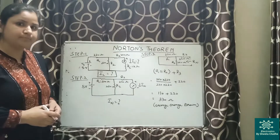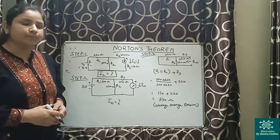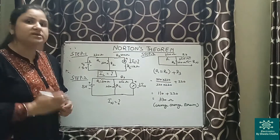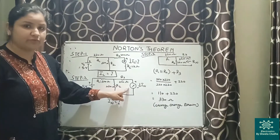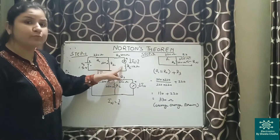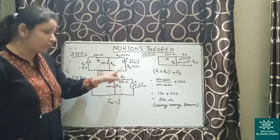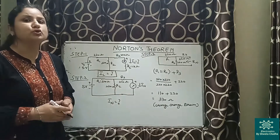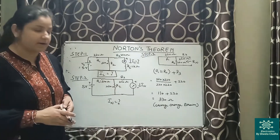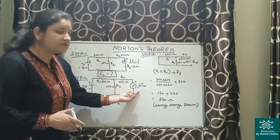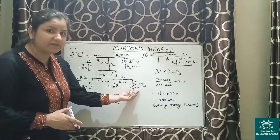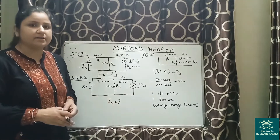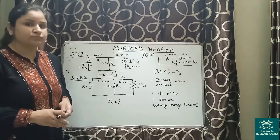In step number 2, we remove Rl and calculate the short circuit current. As you can see, I have removed the 1 kilo ohm Rl, and now we are supposed to calculate the Norton current, that is the short circuit current. By removing Rl, I have connected an ammeter in series, so we will be able to calculate In, that is the Norton current.